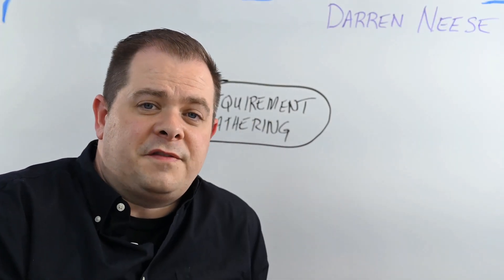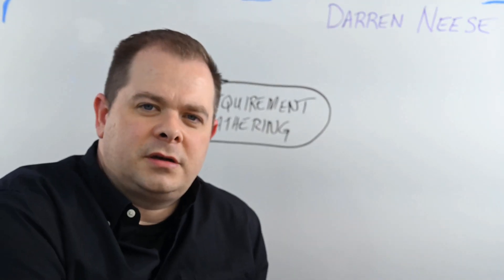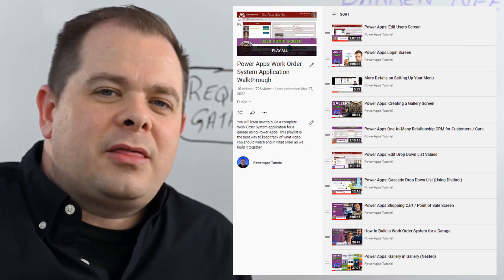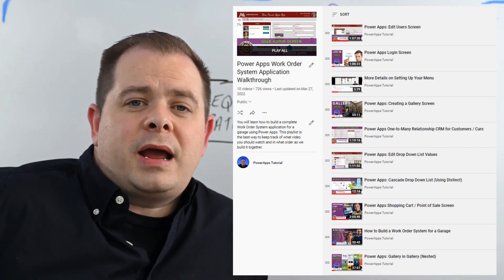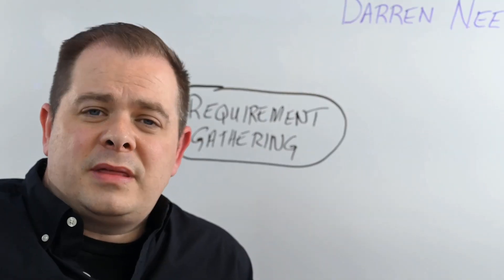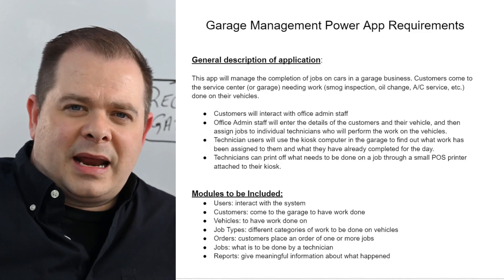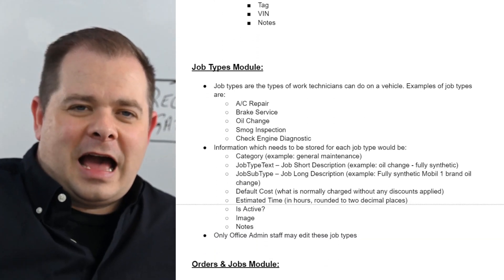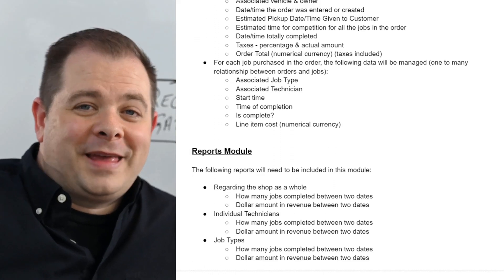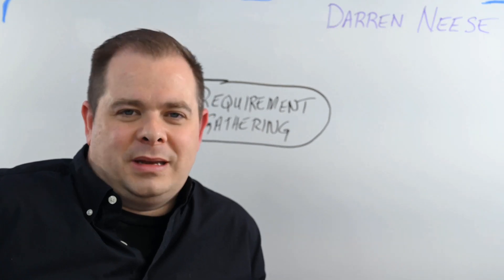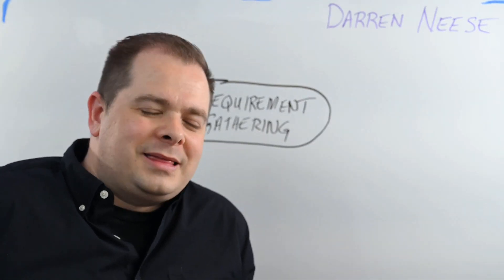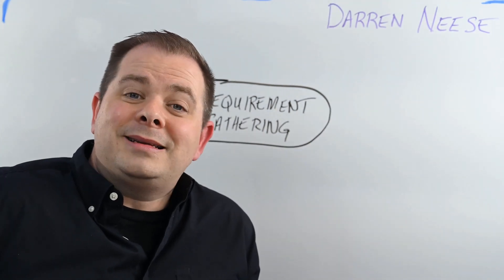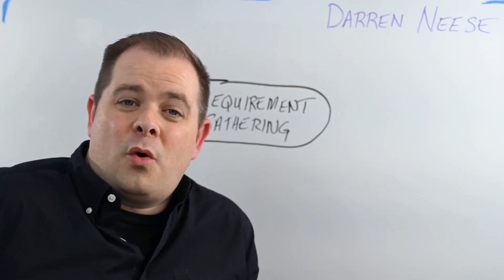This step of the process in the software development lifecycle is just as important as the first and subsequent steps. All of these steps are very important. I will be using the work order system I've been building for a garage as an example to gather these requirements. As I was building the application, going along building out each screen, there was a document I kept referencing. The human brain a lot of times can't hold all that information, so you want these things written down, documented. You don't want to just have a meeting. You need to write these things down, put them into a document, send it back to the people you talked to and say, 'This is what we went over, is all this correct, is there anything that needs to be added or removed?' Very important.